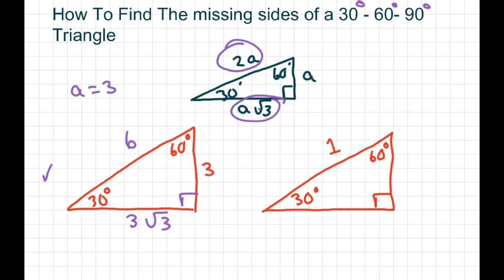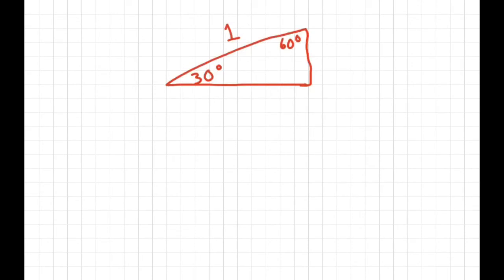For this one, we'll use the same technique. We know the side across from 30 equals A, the side across from 60 equals A square root of 3, and the side across from 90 equals 2A. So we have to solve for A.